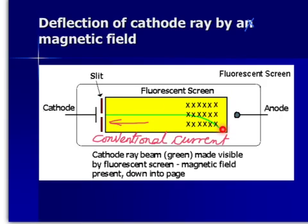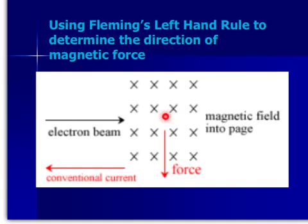The cathode ray beam, or electron beam — shown in green — is made visible by the fluorescent screen, which is shown in yellow. This demonstrates how Fleming's left-hand rule is used to determine the direction of the magnetic force; in this case it is downward.